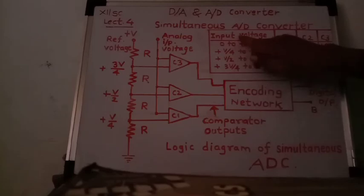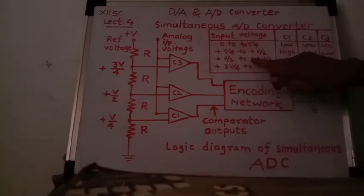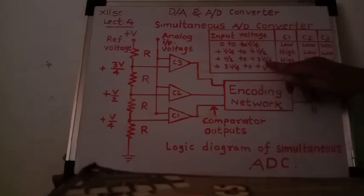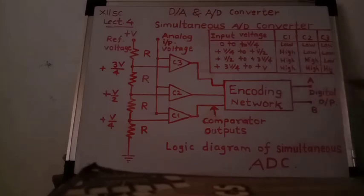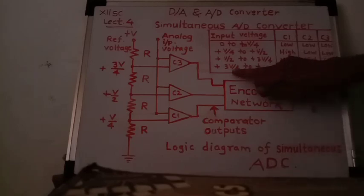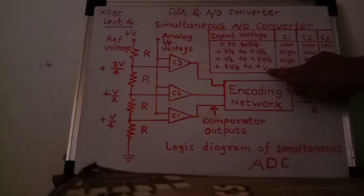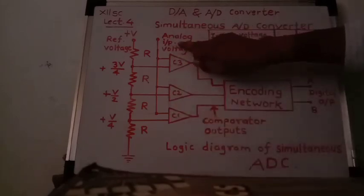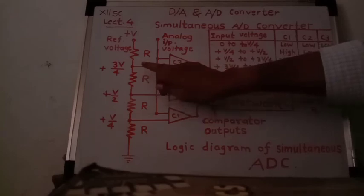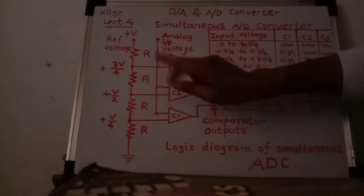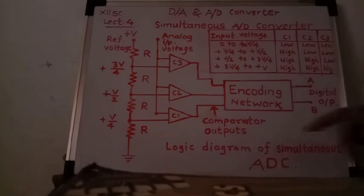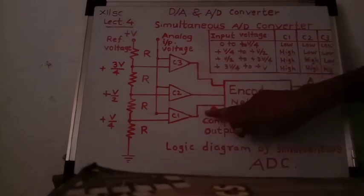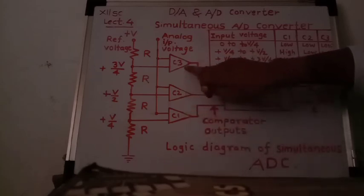If the input voltage is greater than V/2 and less than 3V/4, comparators C1 and C2 go high while C3 goes low. If the analog input voltage is greater than 3V/4, all comparator outputs go high — C1 is high, C2 is high, and C3 is also high.